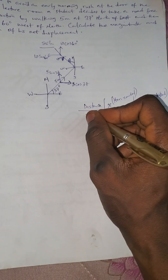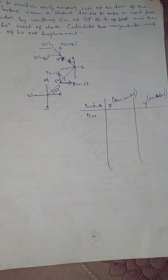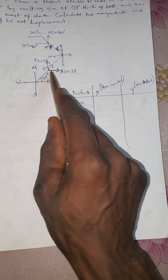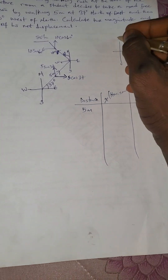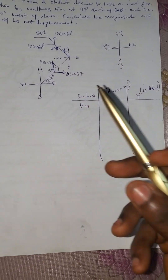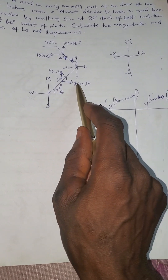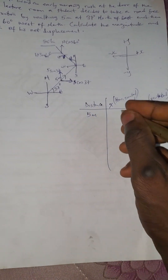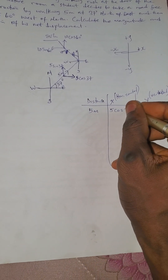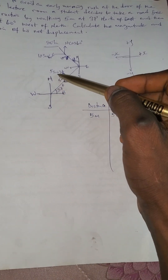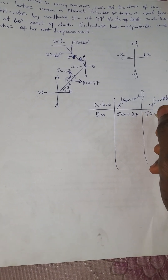For the first 5-meter vector, we check the horizontal component — does it fall to positive x or negative x? It belongs to positive x, so it takes plus: that's plus 5 cos 37. For the vertical component, is it at positive y or negative y? It is at the positive y, so that's plus 5 sine 37.